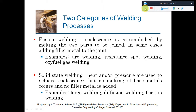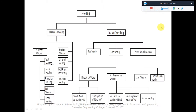Examples of solid state welding include forge welding, diffusion welding, and friction welding. Diagrammatically, we can use a flowchart to classify welding. Under pressure welding we have resistance spot, seam, projection, flash, and also friction, ultrasonic, cold pressure welding, and induction welding.